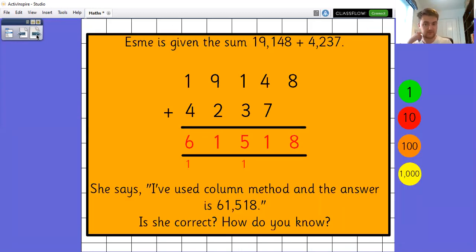Now, here we've got dear old Esme. Esme is given the sum 19,148 plus 4,237. She thinks that she's laid out correctly in the column method. And she's got the answer, 61,518. Have a look at that. Pause the video. So where has she gone wrong and what does she need to do to rectify that?